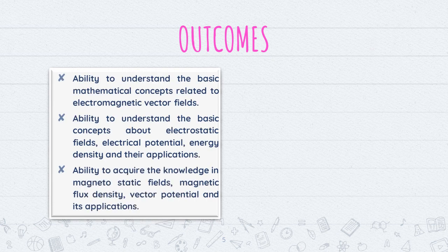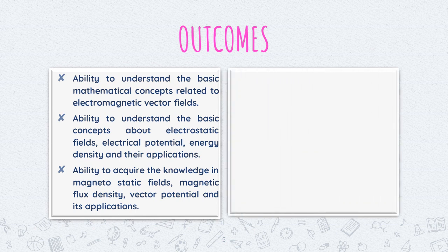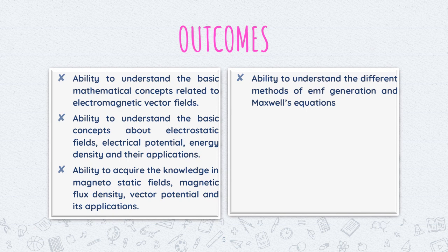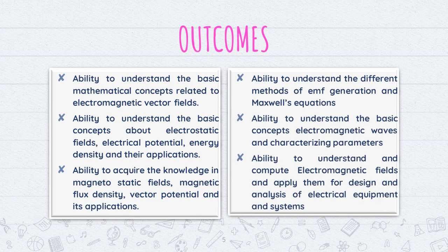The outcomes are: we will be able to understand the basic mathematical concepts related to Electromagnetic Fields, the basic concept of Electrostatic Fields, Electric Potential, Magnetostatic Fields and their potential and applications. The main objective is to learn Maxwell's equation, and after this subject, the outcome is we would know what Maxwell's equation is and how to apply it in Electromagnetic Waves.